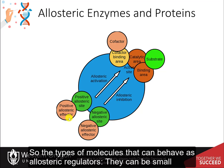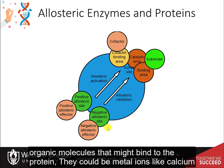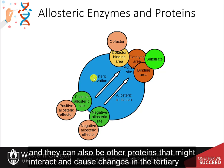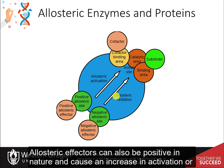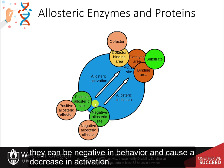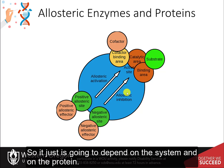The types of molecules that can behave as allosteric regulators include small organic molecules that might bind to the protein, metal ions like calcium, and other proteins that might interact and cause changes in the tertiary structure of the target protein. Allosteric effectors can also be positive in nature and cause an increase in activation, or negative and cause a decrease in activation.